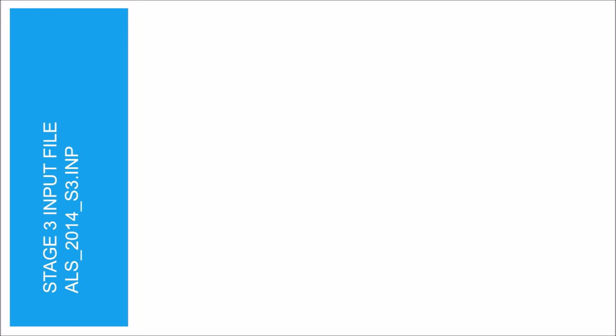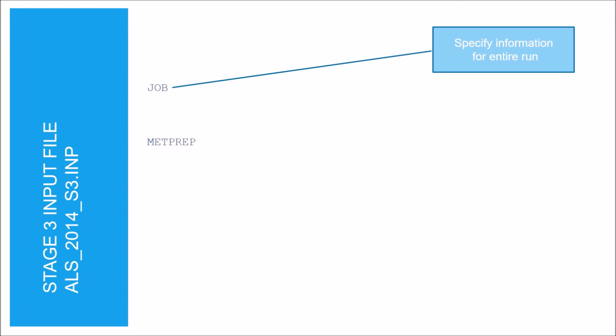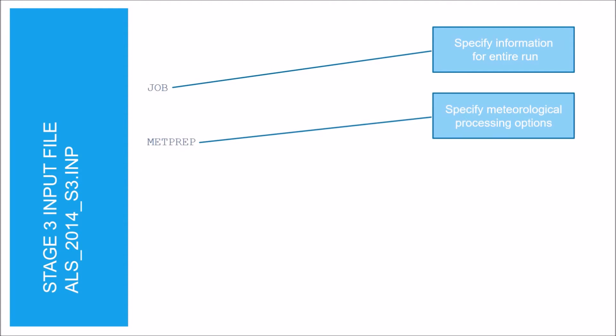The Stage 3 input file name is ALS_2014_S3.INP. Stage 3 processes the meteorological data and generates the surface and profile meteorological data files that will be input into AirMod. Stage 3 has two sections: the job section and the MET prep section, where you specify the meteorological processing options.